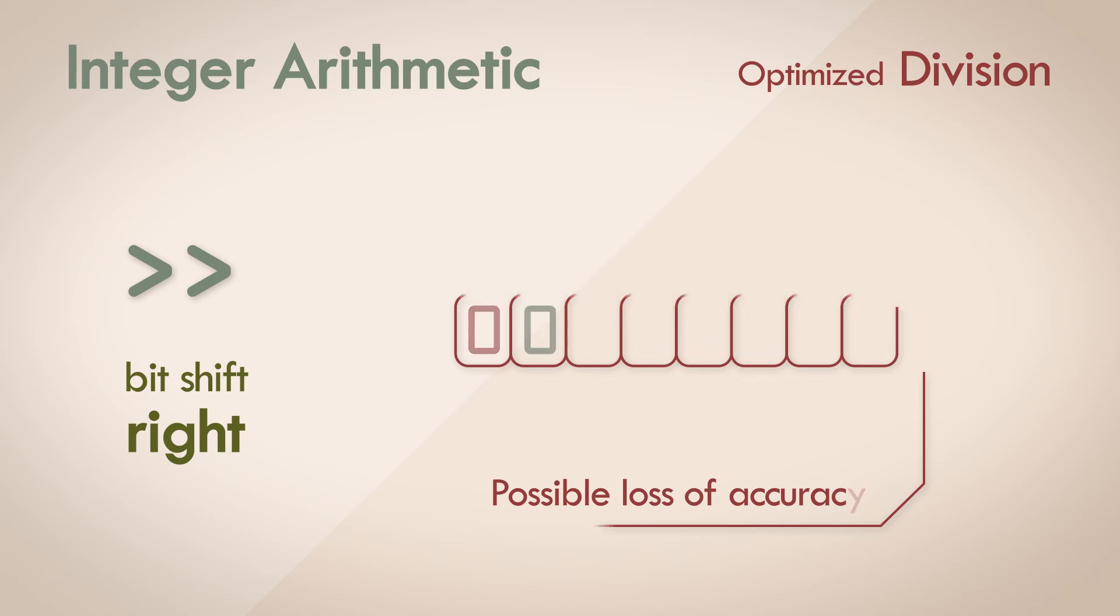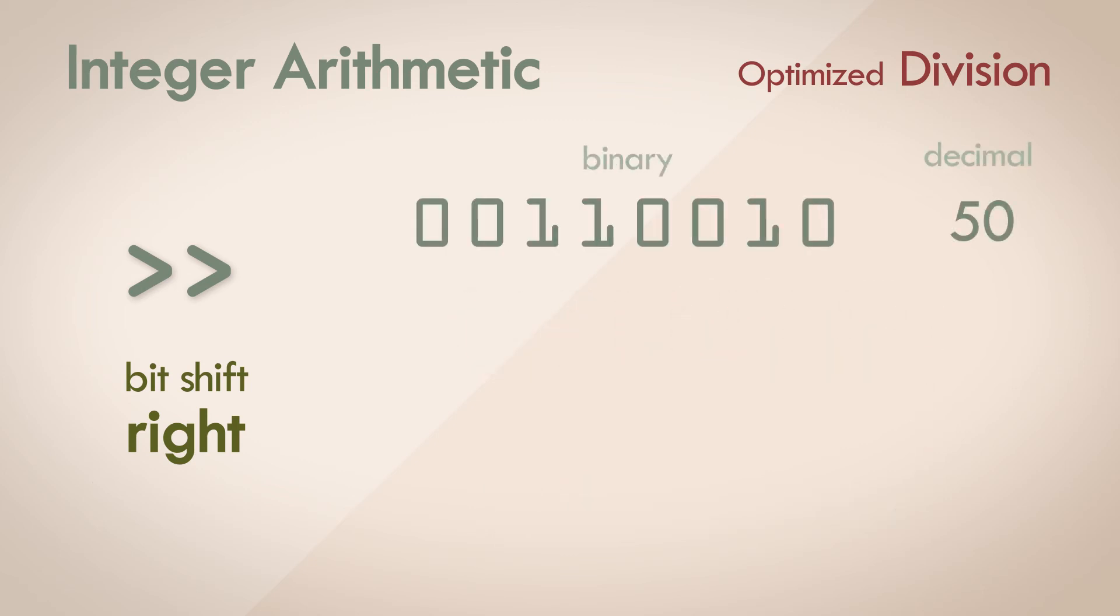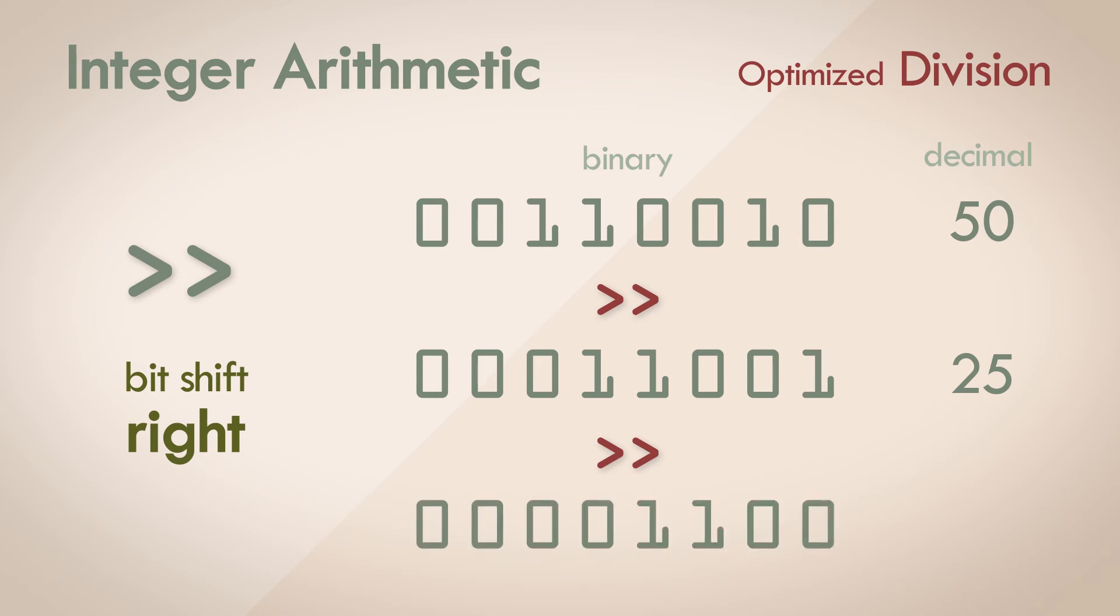Take the same example as before, the number 50. Bit shifting right once will result in this state, which is the decimal equivalent of 25. So it's essentially a division by 2 operation. Do it again, and the state is this. Logically the value should have been 12.5, since you're dividing 25 by 2, but as you can see the LSB which contained 1 in the previous step is discarded, which essentially resulted in loss of accuracy. Because of this, the resultant number is a decimal equivalent of 12.